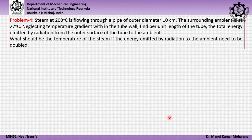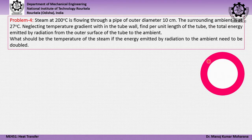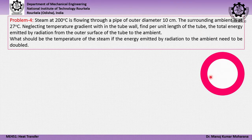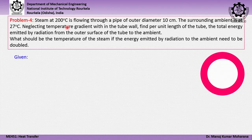We now solve a radiation heat transfer problem. A pipeline carries steam at 200°C with a pipe diameter of 10 cm (0.1 m). The surrounding ambient is at 27°C. We are asked to find the total energy emitted by radiation from the outer surface per unit length of the tube, neglecting the temperature gradient inside the tube wall.